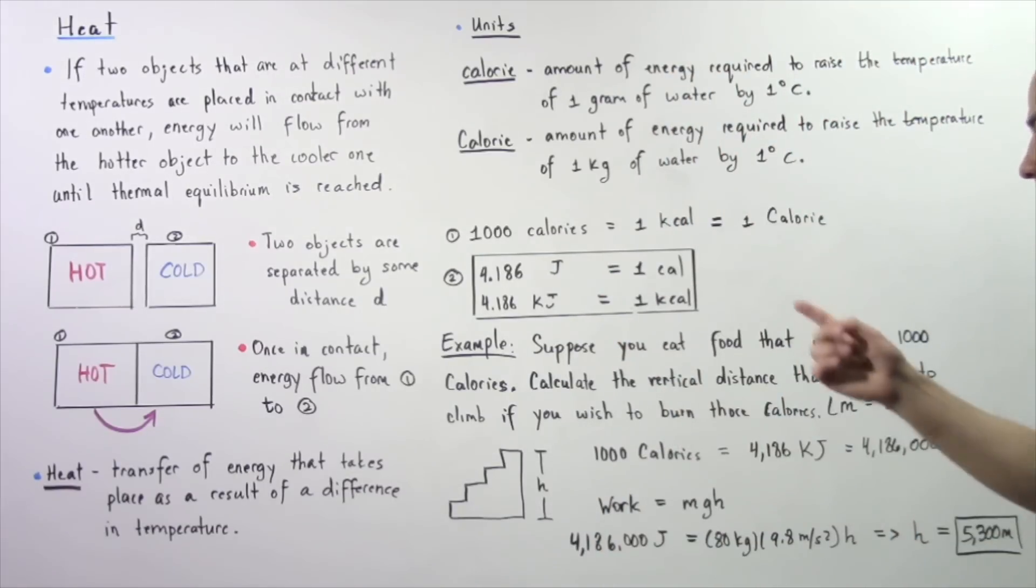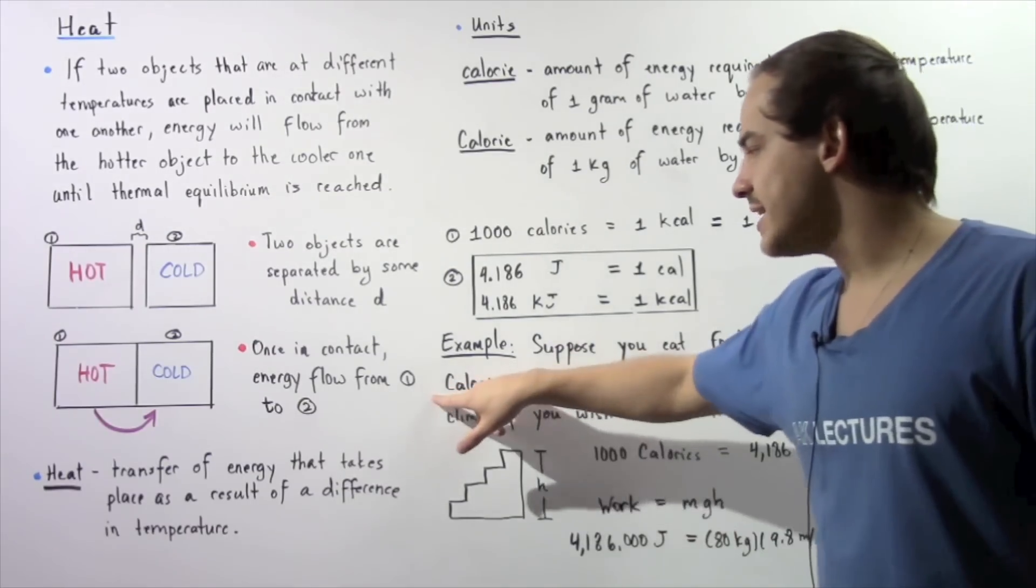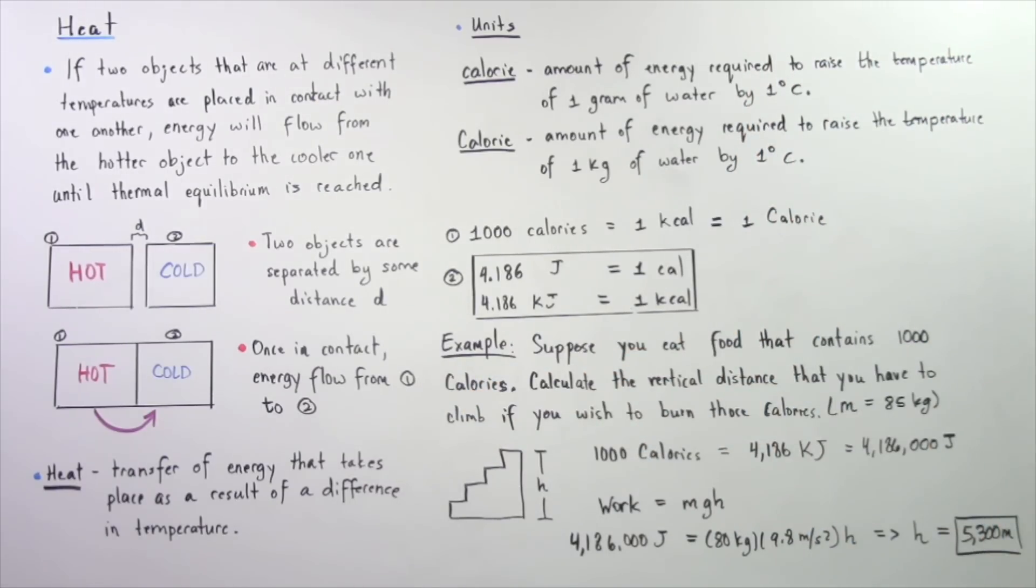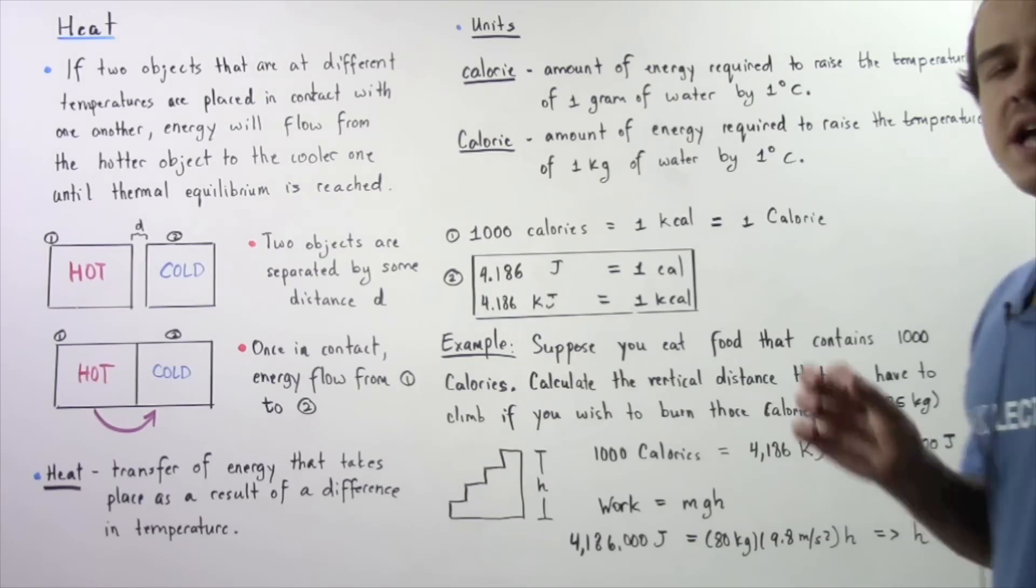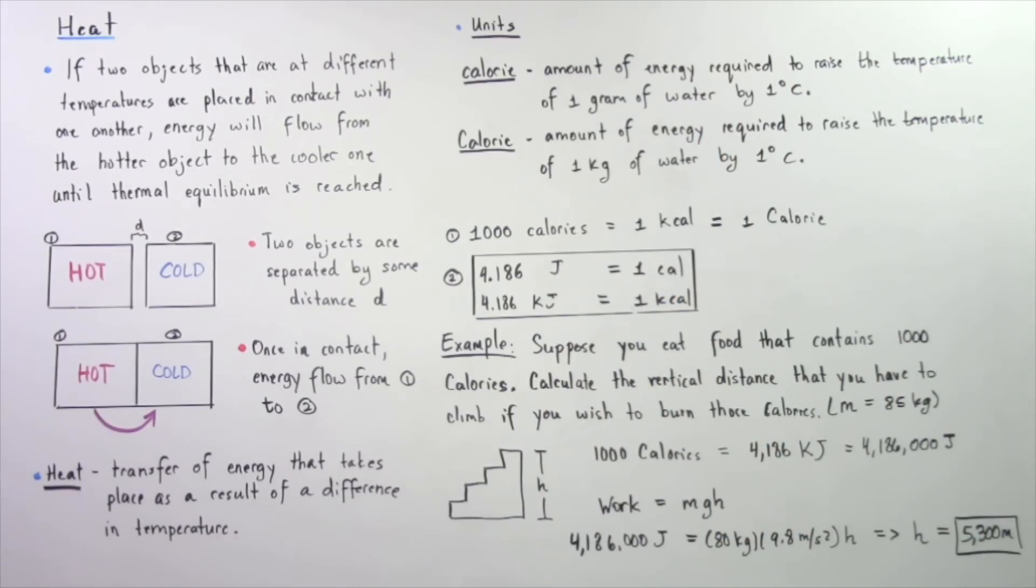Let's quickly look at the following example in which we're going to utilize this concept of energy transfer. Suppose you eat food that contains 1000 Calories of energy where the Calories is given with the uppercase C. Calculate the vertical distance that you have to climb if you wish to burn those calories. Assume that your mass is 85 kilograms.